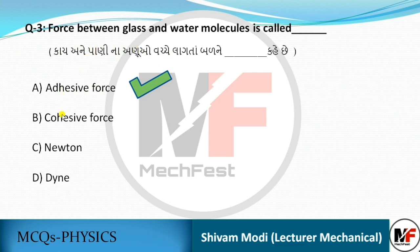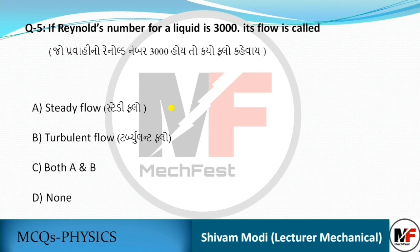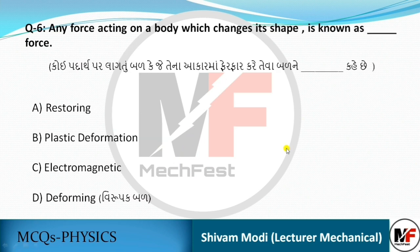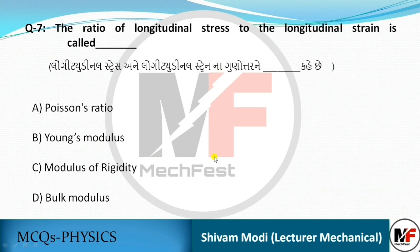If the force is between molecules of the same substance, it is called cohesive force. Any force acting on a body which changes its shape is known as deforming force. If after removing the force the body returns to its original shape, that is called elastic deformation. If it does not return, that is called plastic deformation.